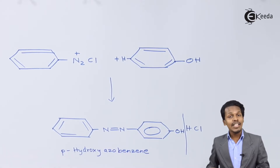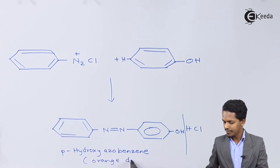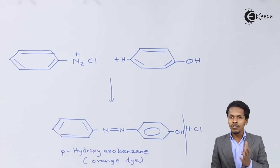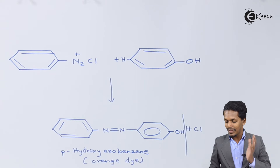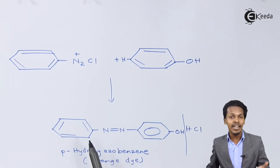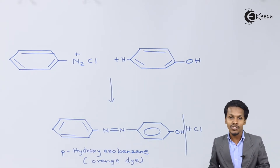Para-hydroxyazobenzene is actually a dye, and it has an orange color. This is how azo coupling occurs, producing a product with an N=N linkage — that is the azo group.